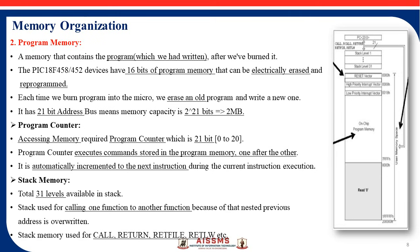The program counter executes commands stored in program memory. For example, suppose your program has an instruction ADD A1 and A2, and the next instruction is SUB A1 and A2. First, the addition instruction is executed and moved to the program counter. Then the subtraction instruction is moved to the program counter. The program counter executes instructions one by one and automatically increments to the next instruction during current instruction execution, storing each executed instruction sequentially.